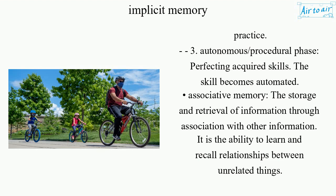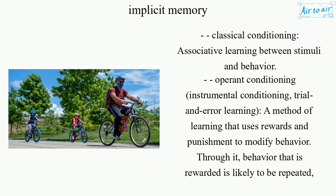Associative memory is the storage and retrieval of information through association with other information. It is the ability to learn and recall relationships between unrelated things. Classical conditioning is associative learning between stimuli and behavior.